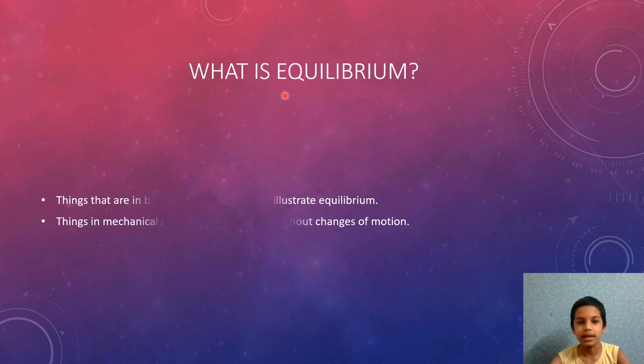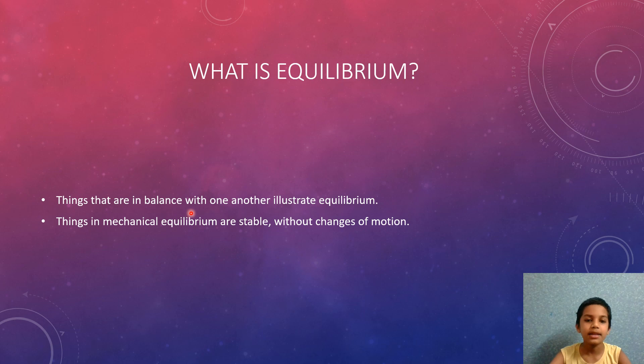What is equilibrium? Things that are in balance with one another are known as in a state of equilibrium. Things in mechanical equilibrium are stable without any changes of motion. A state in which all forces or influences are balanced is known as equilibrium.